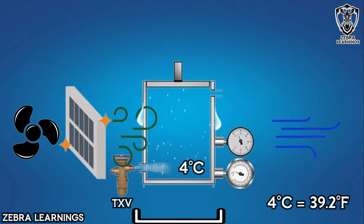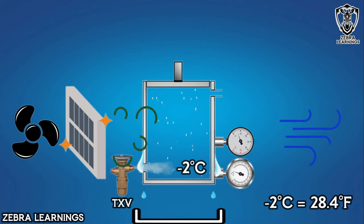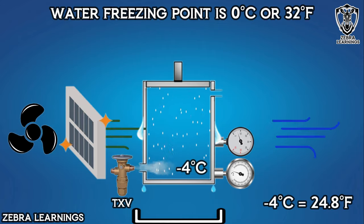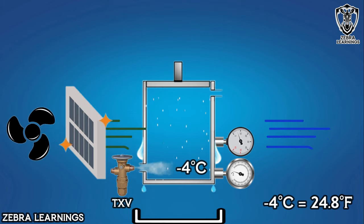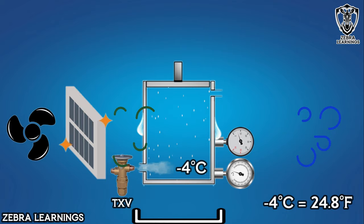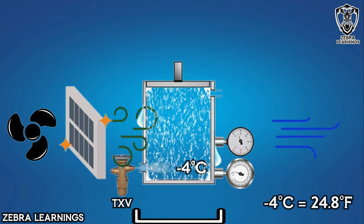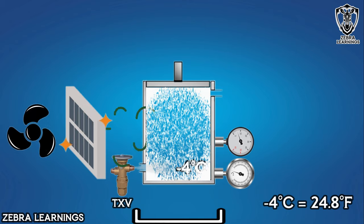Refrigerant which is already at 4 degrees Celsius will further decrease to minus. Now, the evaporator coil temperature is minus 4 degrees Celsius. The freezing point of water is 0 degrees Celsius. Since the evaporator coil is at minus 4 degrees Celsius, the water from condensation on it freezes. It spreads little by little and freezes all over the evaporator coil. As the frozen evaporator coil becomes blocked, the air cannot pass through, so the temperature of the room increases.